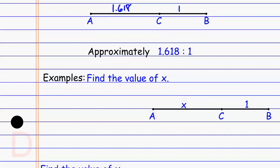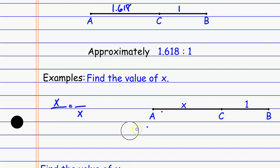For example, if we have something like this — find the value of x. We could find this exactly by saying, if this is the golden ratio, then x would have to be the geometric mean between the smaller piece and the whole thing. The smaller piece would be 1, and the whole thing would be x plus 1. From here we solve, and we get x squared equals x plus 1.